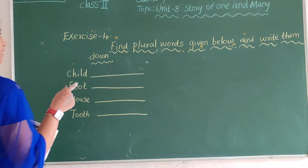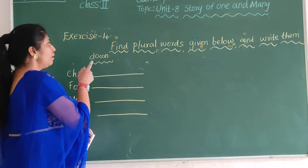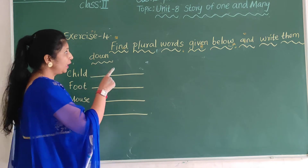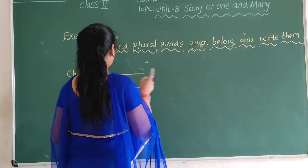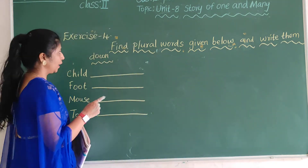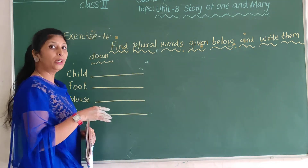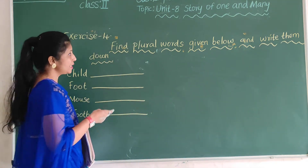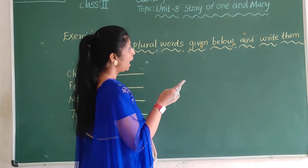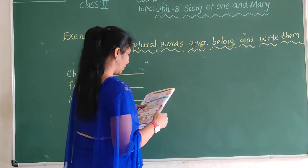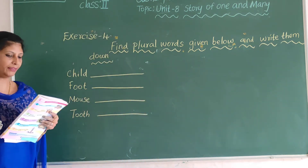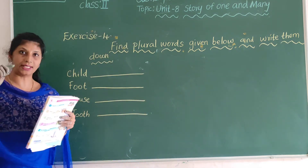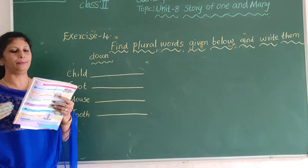Next, exercise is four, children. Five plural words are given below. Okay, already now we should have learned what is singular and plural.